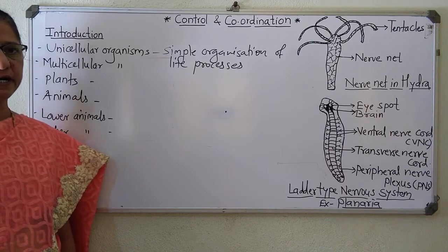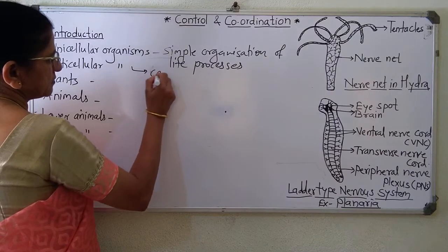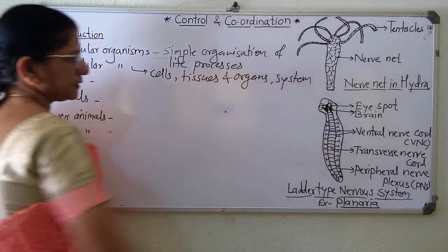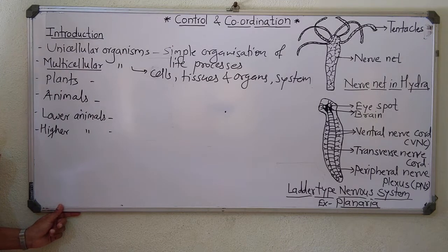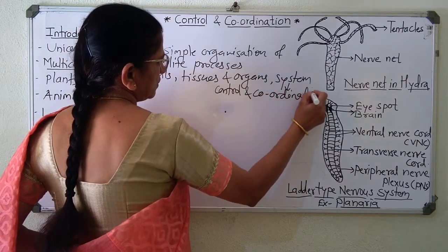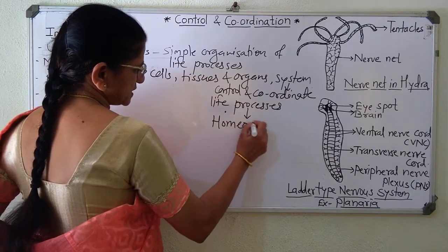There is no such kind of nervous system present in unicellular organisms. In multicellular organisms, there are cells, tissues, organs, and systems. There is a cellular organization present. Cells together form tissues, tissues form organs, and organs form systems. The nervous system controls and coordinates the different life processes to bring about homeostasis inside the body.